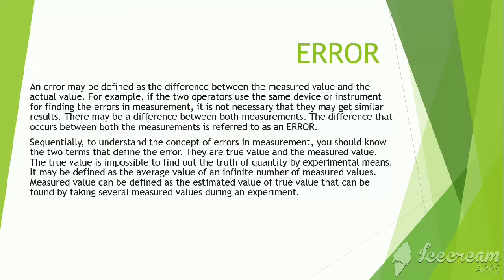Sequentially, to understand the concept of errors in measurement, you should note the two terms that define the error. They are true value and measured value. The true value is impossible to find out by experimental means. It may be defined as the average value of an infinite number of measured values. Measured value can be defined as the estimated value of true value that can be found by taking several measured values during an experiment.